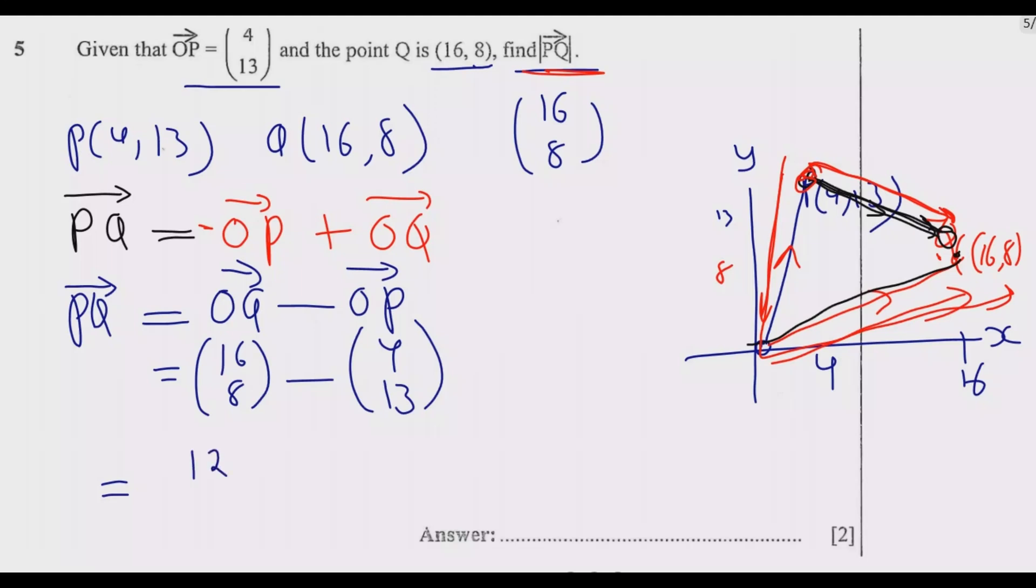So this is PQ which is in the position vector or the direction, but the question is asking us to find the magnitude of PQ, this magnitude. So to find this magnitude, what we do is we need to find this.